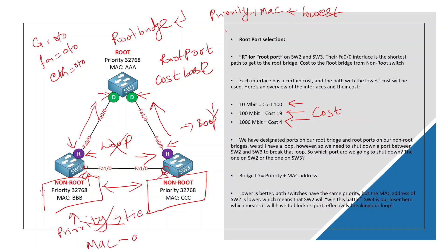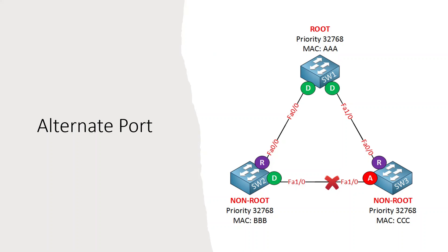MAC address is unique. MAC address BBB versus CCC — BBB is the lowest. Switch BBB wins, so that port is designated. The other side is alternate. We can process traffic on the designated port. You can enable STP and select the root bridge. This port is blocked. We can check the CLI status. This is the alternate port; this port is blocked.